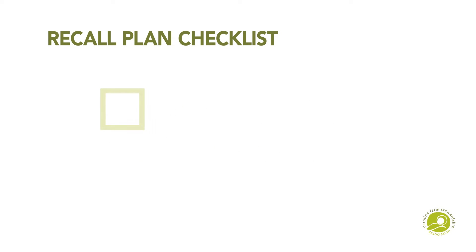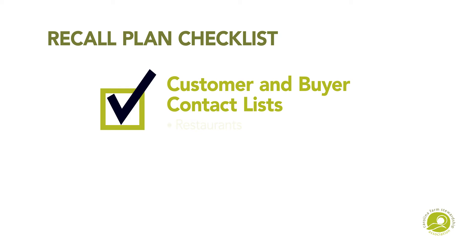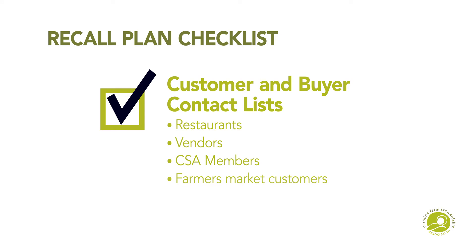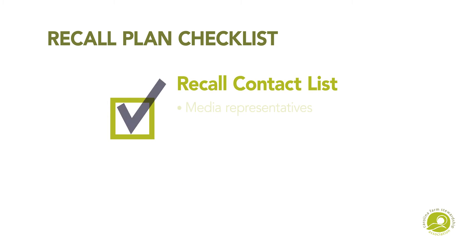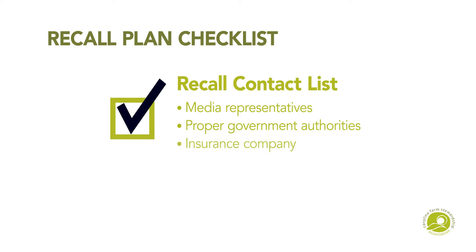A recall plan checklist should include the following: customer and buyer contact lists, including restaurants, other vendors, CSA members, and farmer's market customers. It should also include a recall contact list with names and phone numbers of media representatives, proper government authorities, your insurance company, and legal counsel.